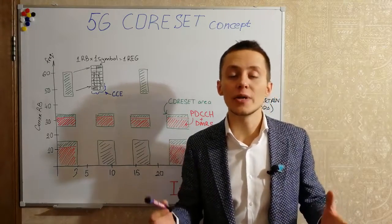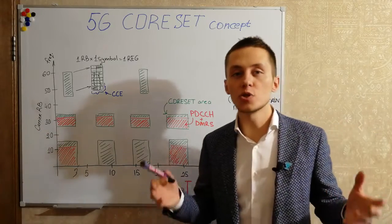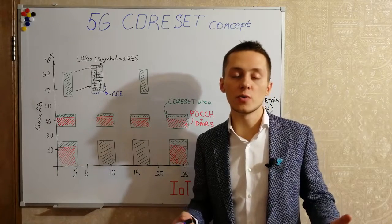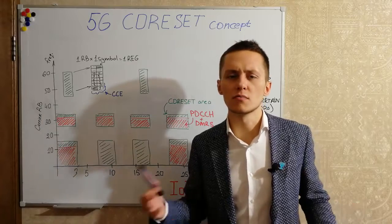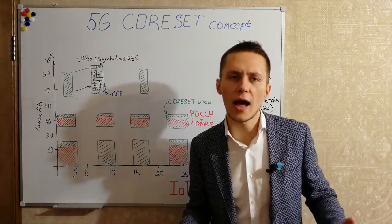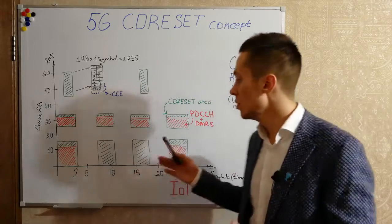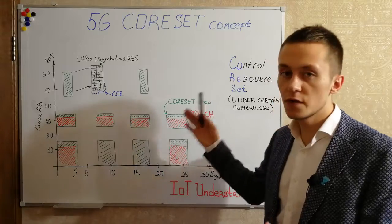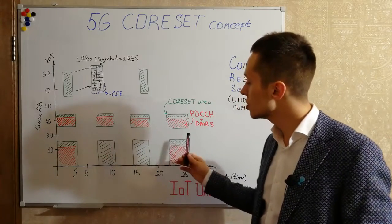In 5G we have a core set concept, we have bandwidth parts, so we don't have to have any specific channels to let UE know how downlink control channel is allocated. We have specific areas, very configurable, very flexible, with some repetitions.